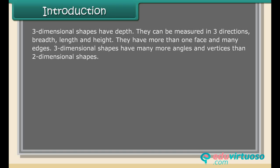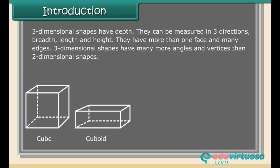Three-dimensional shapes have depth. They can be measured in three directions: breadth, length, and height. They have more than one face and many edges. Three-dimensional shapes have many more angles and vertices than two-dimensional shapes, such as cube, cuboid, cylinder, prism, and pyramid.